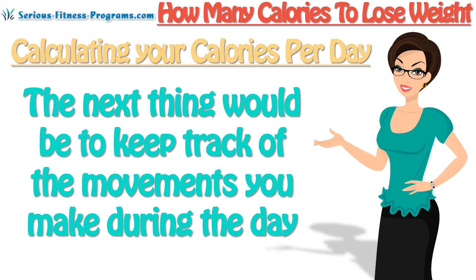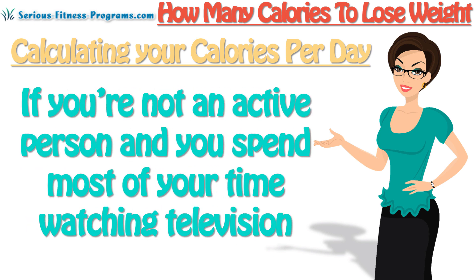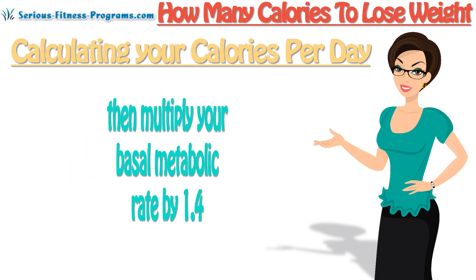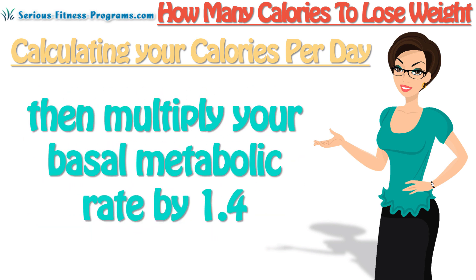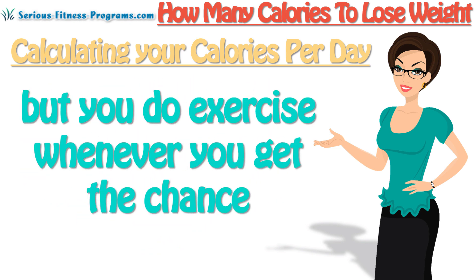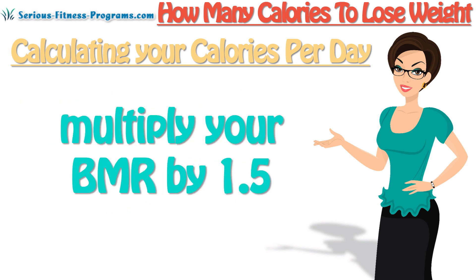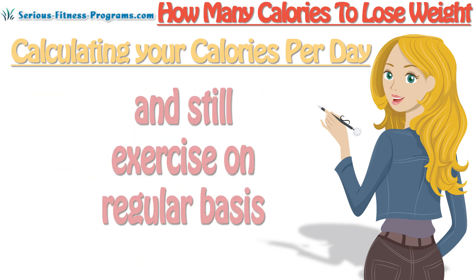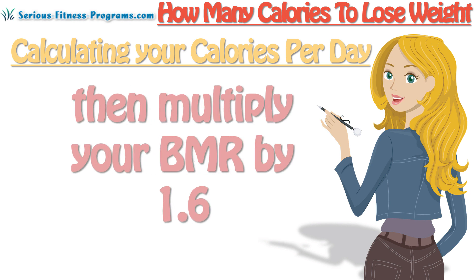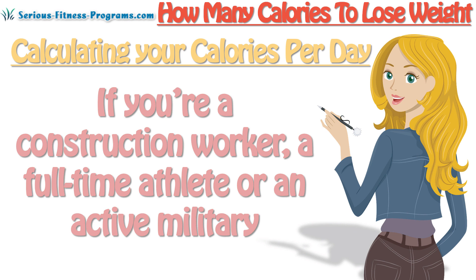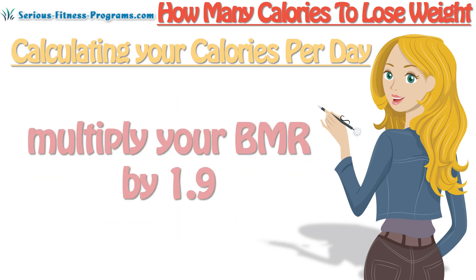The next thing would be to keep track of the movements you make during the day. If you're not an active person and you spend most of your time watching television, reading, or just sitting, then multiply your basal metabolic rate by 1.4. If you're a little bit active, maybe you've got a job that requires you to sit throughout the day but you do exercise whenever you get the chance, multiply your BMR by 1.5. If you engage in active activities during the day, like house cleaning and chores, and still exercise on a regular basis, then multiply your BMR by 1.6. If you're a construction worker, a full-time athlete, or active military, multiply your BMR by 1.9.